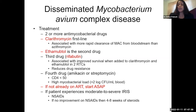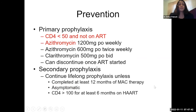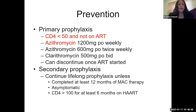For IRIS management in MAC: NSAIDs first, and if NSAIDs don't work, try corticosteroids. For prevention: if CD4 count is less than 50 and not on ART, do primary prophylaxis with azithromycin or clarithromycin. If starting the patient on ART with CD4 less than 50, you don't need to start primary prophylaxis — this is really for patients not on ART. For secondary prophylaxis after MAC, continue therapy as long as needed. Stop when they've completed at least 12 months, are asymptomatic, and CD4 is greater than 100 for at least six months on ART.